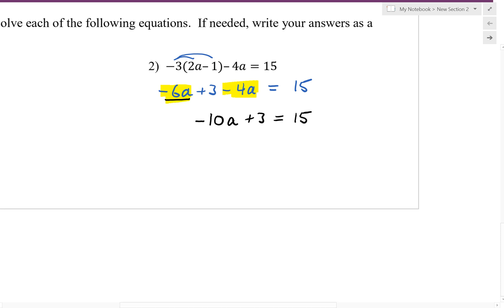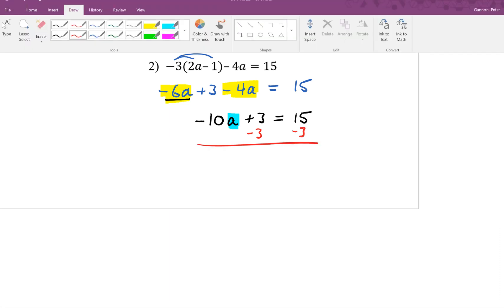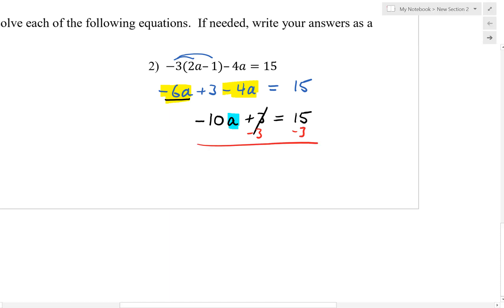Which is going to give us negative 10a plus 3 equals 15. At that point, we have simplified both sides of the equation, and now we want to isolate the variable. Our first step in isolating is going to be to subtract 3 from both sides of the equation. If those 3s cancel, we have negative 10a equals 15 minus 3, which is 12.